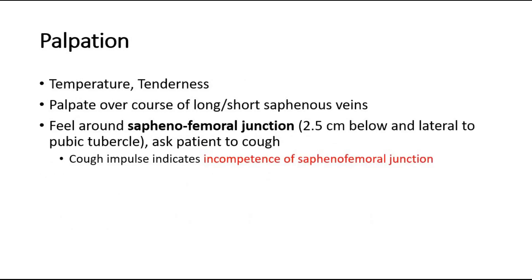Next, proceed to palpation. Palpate over the course of the long and short saphenous veins, checking temperature and any tenderness along the veins. Also feel around the saphenofemoral junction, located 2.5 cm below and lateral to the pubic tubercle. Ask the patient to cough — a palpable cough impulse suggests incompetence of the saphenofemoral junction.